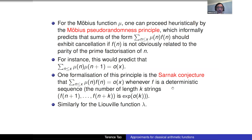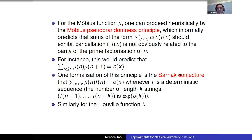Perhaps the most famous formal version of this principle is the Sarnak conjecture, which says that whenever you have a deterministic sequence — one taking only finitely many values where the number of distinct length-k subwords grows sub-exponentially in k — you get cancellation when correlating with Möbius. A periodic sequence is deterministic but not the only example. This conjecture is still open, though many special cases have been verified. It turns out to be essentially equivalent to the Chowla conjecture.